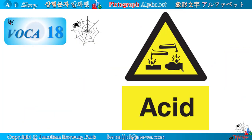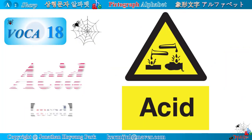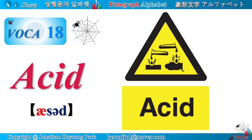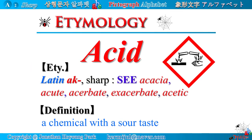Vocabulary number 18: Acid. Etymology — Acid is derived from Latin root 'ache,' meaning sharp. There are many related words containing this root, such as acacia, acute, acerbate, acetic, etc.